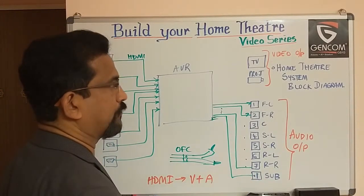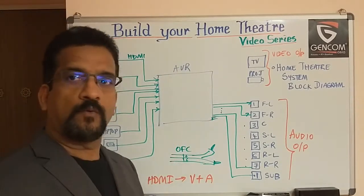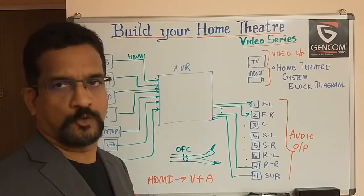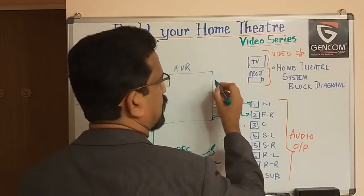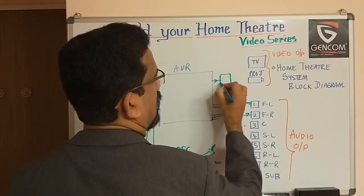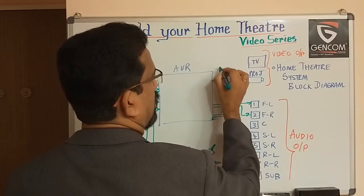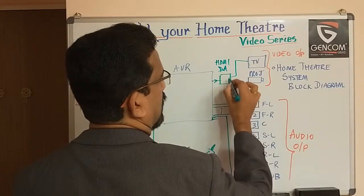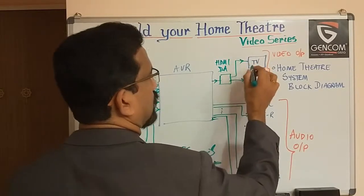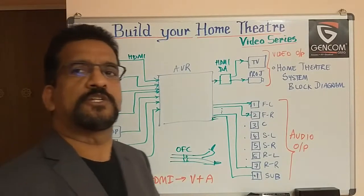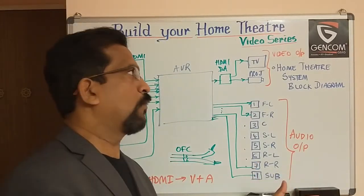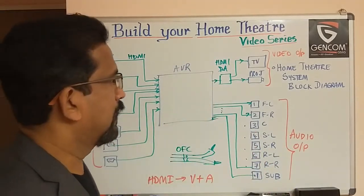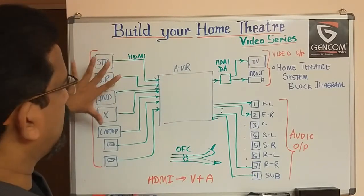That is the subwoofer connection. For video output, the AV receiver may have one or two HDMI outputs. If it has only one, nothing to worry — you use an HDMI distribution amplifier, which distributes the same output signal to both the TV and the projector. So now we have taken care of all the inputs going into the AV receiver, the audio outputs, and the video outputs.